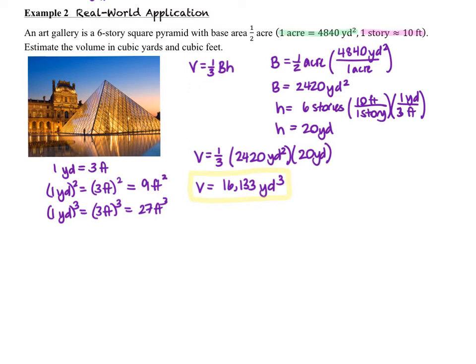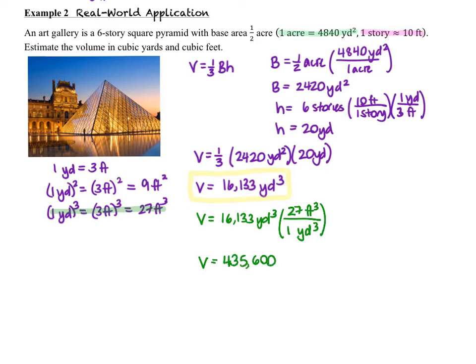We could start over and convert everything into feet, but another choice is to multiply our 16,133 cubic yards by a conversion factor: 27 cubic feet per cubic yard — that gets rid of cubic yards and gives us our volume in cubic feet. This is very important. Students often think conversion factors are too complicated, but they're really great for science and make sure you avoid unit errors. Get in the habit of it.